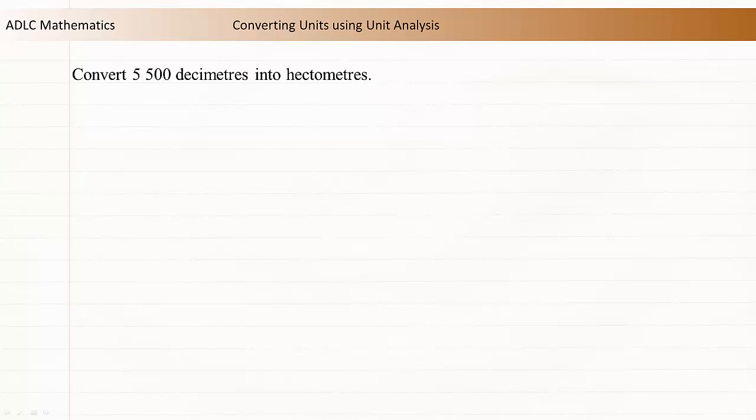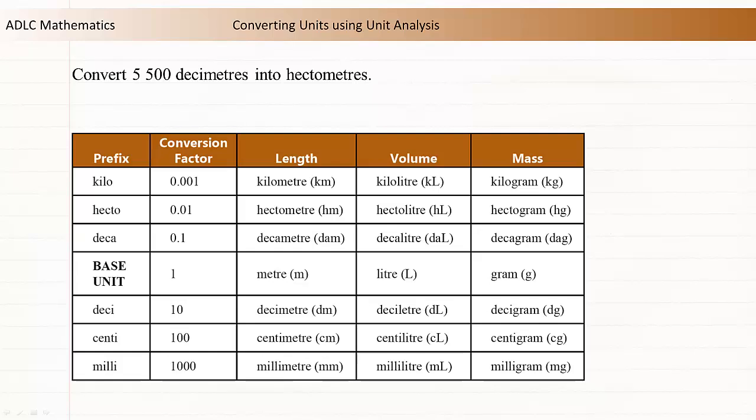Again, we're going to need to use a conversion ratio. Let's use the prefix table to determine a conversion ratio. We're interested in converting decimeters to hectometers, and 0.01 hectometers equals 10 decimeters.